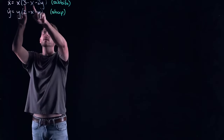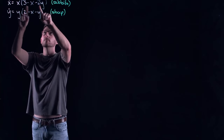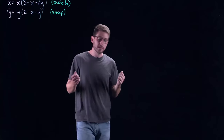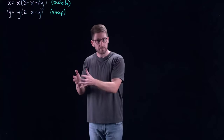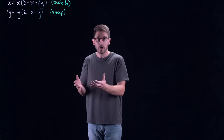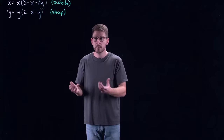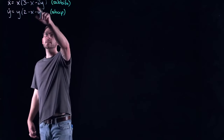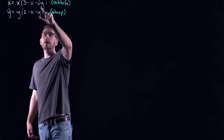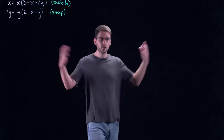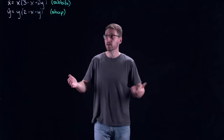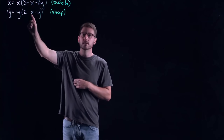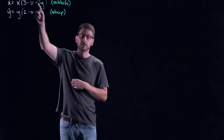Beyond the logistic term, the relative growth rate of the rabbits and sheep are driven down by the other species. More sheep means rabbits have less space and resources, so they grow at a slower rate. Similarly, more rabbits means less room for sheep. The interactions are not proportional — there's a coefficient of two on y, because sheep are big and take up a lot of space and resources. The presence of a single sheep has a larger impact on the rabbits than the presence of a single rabbit has on the sheep.